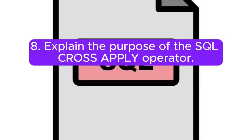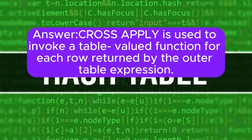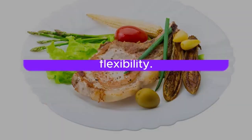Question 8: Explain the purpose of the SQL cross apply operator. Answer: Cross apply is used to invoke a table-valued function for each row returned by the outer table expression. It can be an alternative to the inner join, and can provide more flexibility.